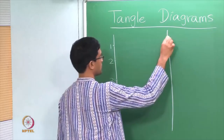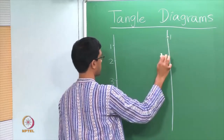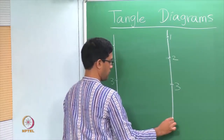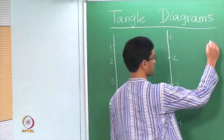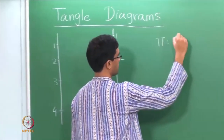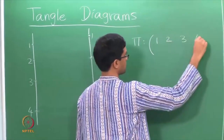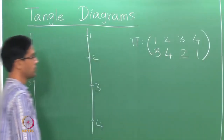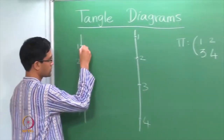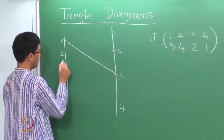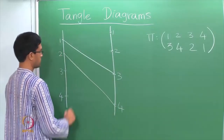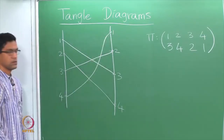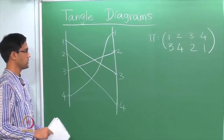We draw 4 points labeled 1, 2, 3, 4 on either side. Suppose we want the permutation pi which, in 2-line notation, sends 1, 2, 3, 4 to 3, 4, 2, 1. So 1 maps to 3, we join 1 and 3; 2 maps to 4, so we join 2 and 4; 3 maps to 2 and 4 maps to 1.